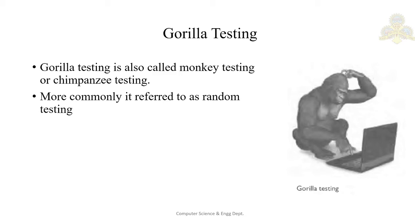The next type is gorilla testing, also called monkey testing or chimpanzee testing, and commonly referred to as random testing. As the name suggests, you test it randomly — whatever you type in, you test it. Imagine giving your developed software to an actual gorilla: it would randomly press keys, some of which may be valid inputs and some not. This random testing may bring out defects when wrong inputs are given.